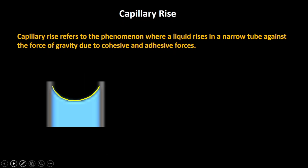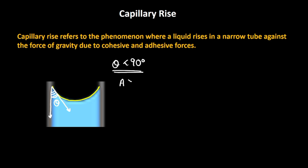If we zoom in a little, we can see how the meniscus would be formed. If we find the angle of contact in this case, it comes out to be less than 90 degrees — it's an acute angle. This tells us that the adhesive forces are stronger than the cohesive forces, and the water likes to stick to the surface of the glass rather than to itself. So the cohesive forces between water and water are lesser compared to the adhesive forces between glass and water.